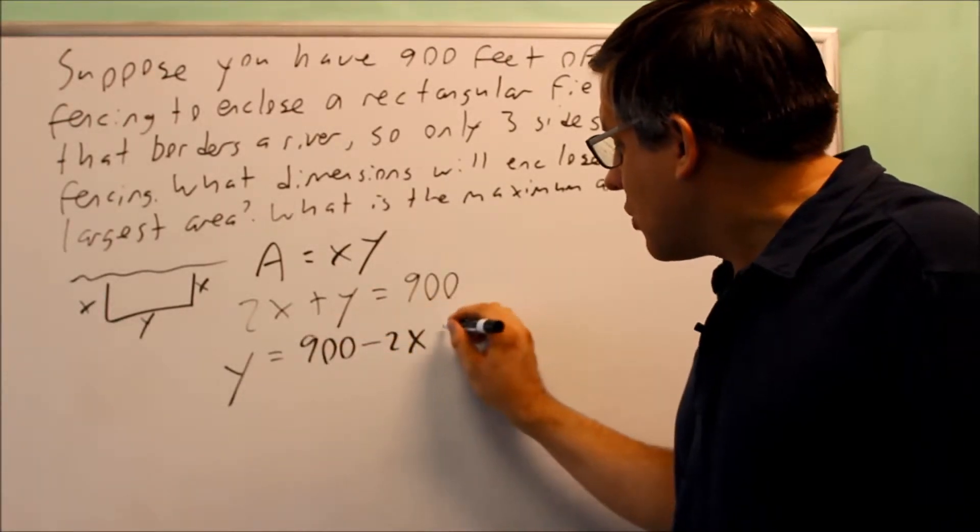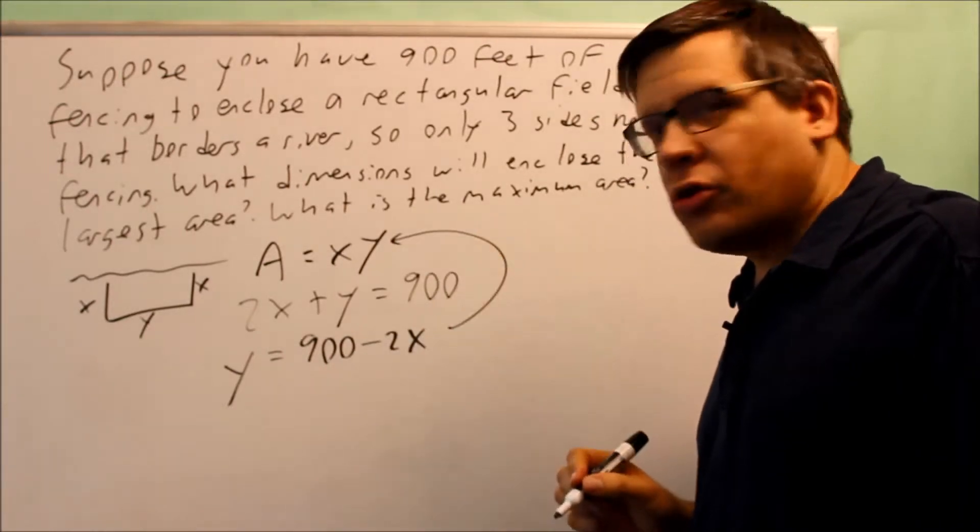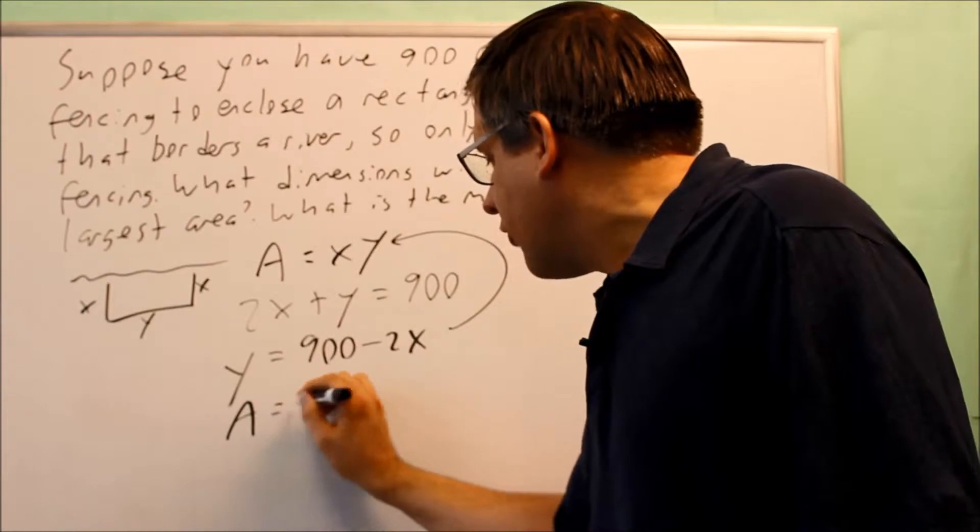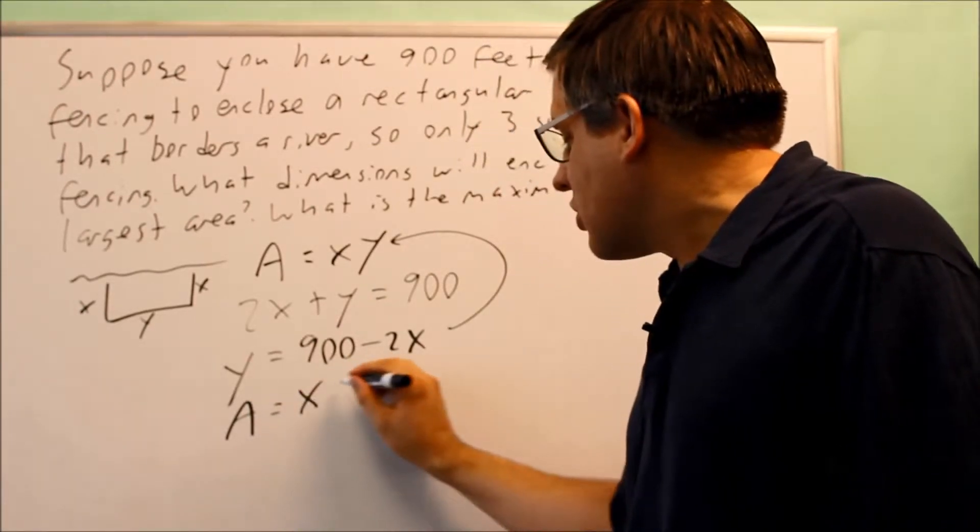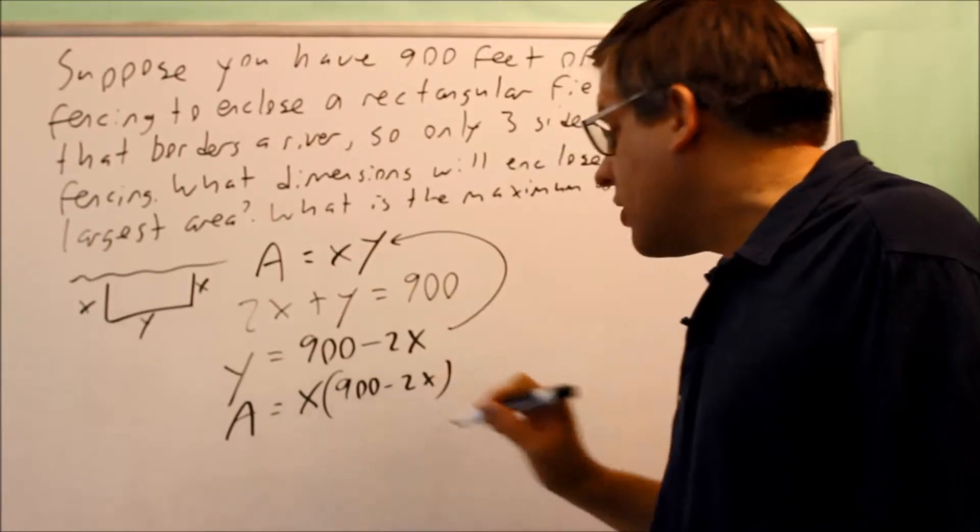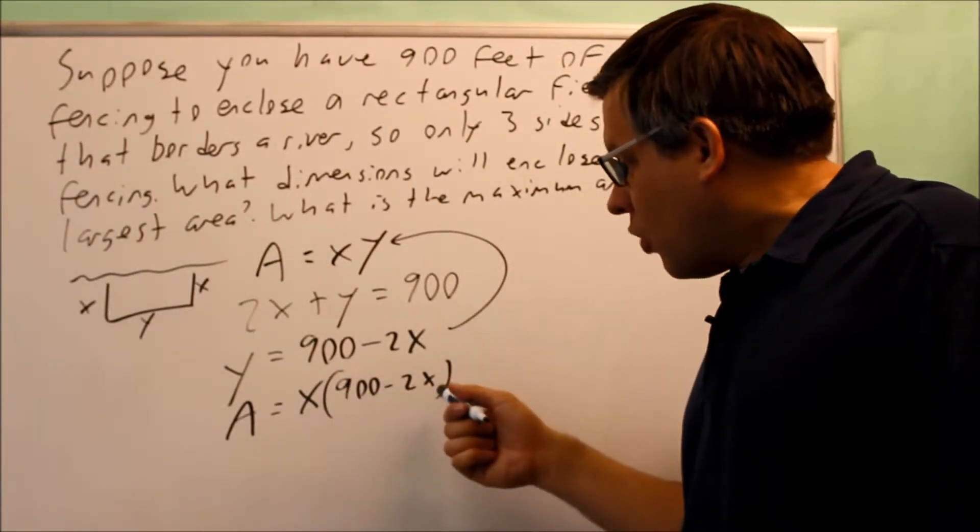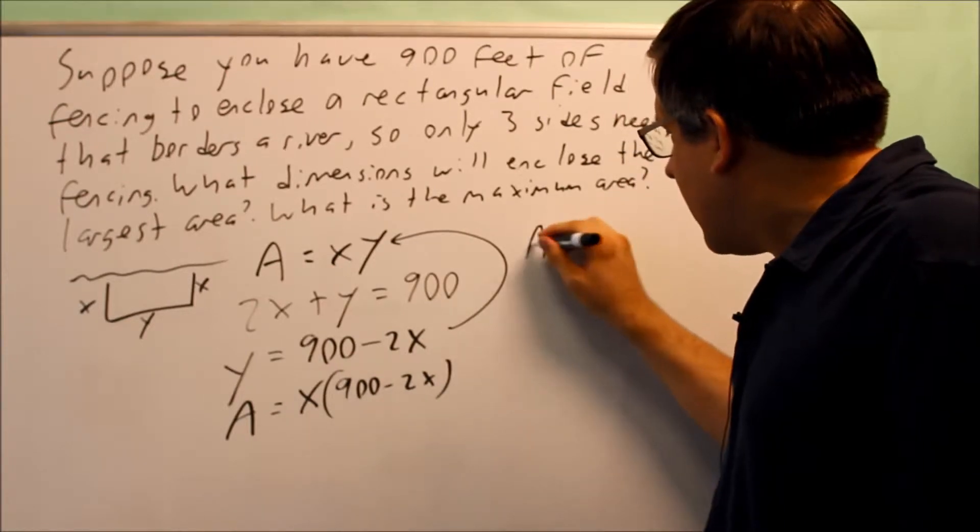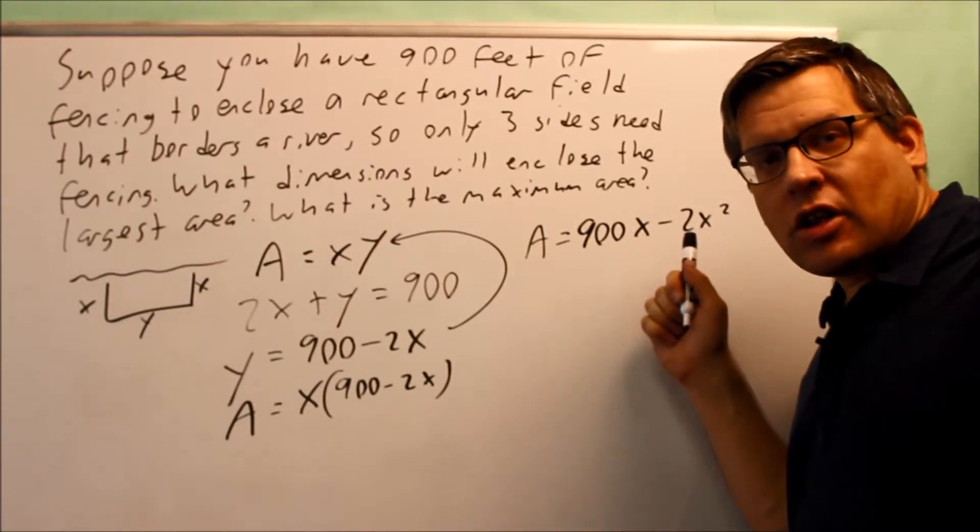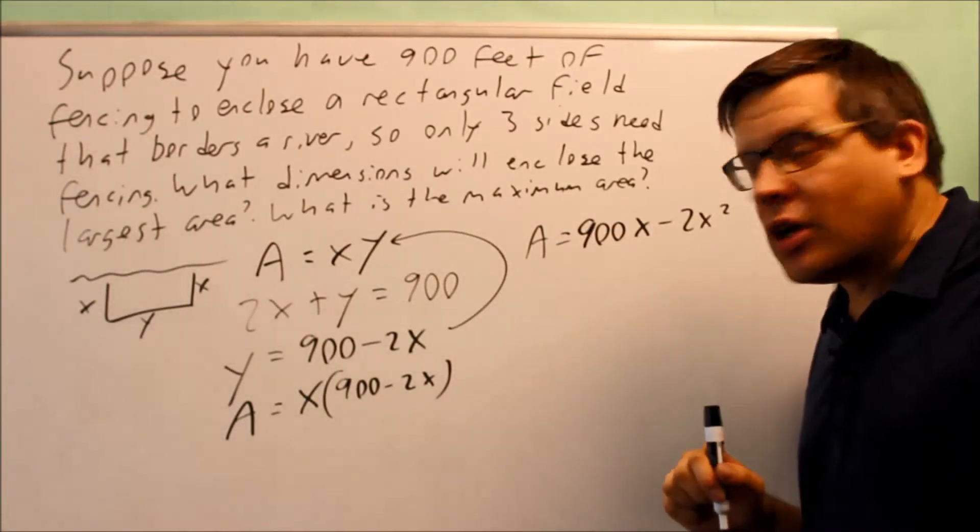Now I'm going to take this and put it into the first formula in place of the y. I get area equals x times (900 minus 2x). Now I have an area formula that has one variable. If I multiply it out, I get 900x minus 2x squared. That's the quadratic I'm going to be working with using the negative b over 2a formula.